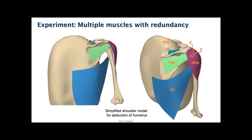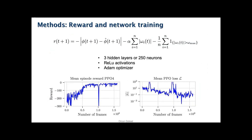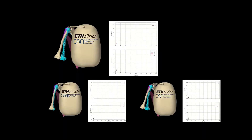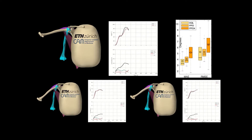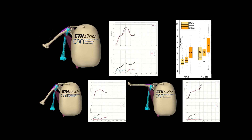We studied the same 1D shoulder abduction control using 4 muscles that contribute to this motion. As DQL is not scalable in this setting, all following experiments were conducted using PPO only. The mean episode reward and loss show that PPO with 4 muscles again converges. We demonstrate the tracking of 3 sample test trajectories using 4 muscles. Average test errors are seen to increase slightly, but not majorly, compared to the single muscle case.